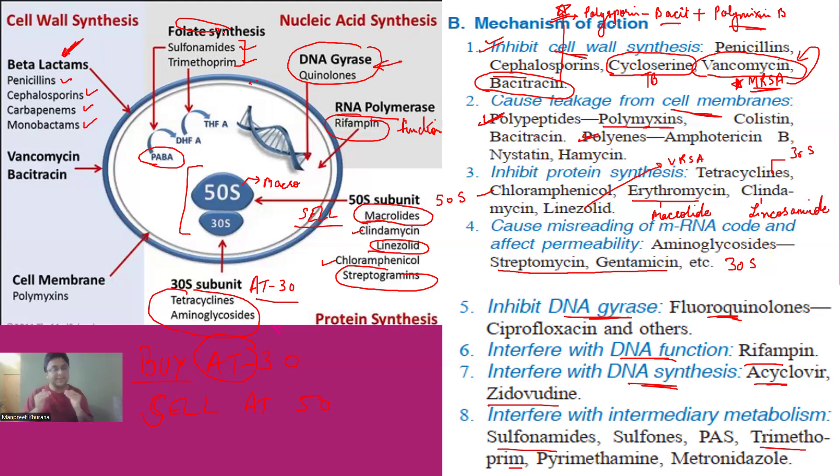Then we have the cell membrane. Cell membrane are poly-poly. So polypeptide and polyene. Polypeptide, we have polymyxin, which was a part of polysporin. And the polyenes, we have antifungals like amphotericin B and nystatin. Then we have the major ones with the protein synthesis. Always remember, BUY at 30, SELL at 50. So BUY at 30 means aminoglycoside and tetracycline for 30S ribosome. And for 50S, it is bigger, macrolide, then SELL. So you can say streptogramins, linezolid and 2C, CC, clindamycin and chloramphenicol.